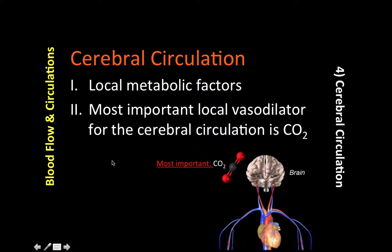Vasoactive substances in the systemic circulation have little or no effect on the cerebral circulation because these substances are excluded by the blood-brain barrier. We previously discussed how capillaries in the brain have exceptionally tight endothelial cells. This concludes our discussion of both coronary circulation and cerebral circulation.